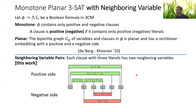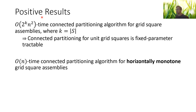That's it for background and some details on hardness. I will now talk about our positive results. Our main positive result is a 2^k * n^2 time algorithm for the connected partitioning problem for grid square assemblies, where k is the size of the partition that we find. This means that if there is a partition where only a small number of squares has to go up, we can find it quickly — the problem is fixed parameter tractable. The other result is a linear-time connected partitioning algorithm for a special class called horizontally monotone grid square assemblies.